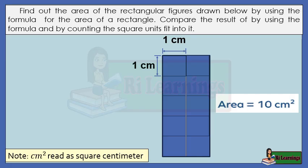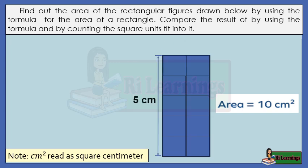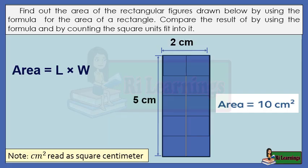Find out the area of the rectangular figure below using the formula and compare the result with counting the square units. Since the length of the rectangle has 5 units of 1 centimeter squares, the length of the rectangle is equal to 5 centimeters. The width of the rectangle has 2 units, so the width equals 2 centimeters. Using the formula: area equals length times width — 5 centimeters times 2 centimeters equals 10 square centimeters.